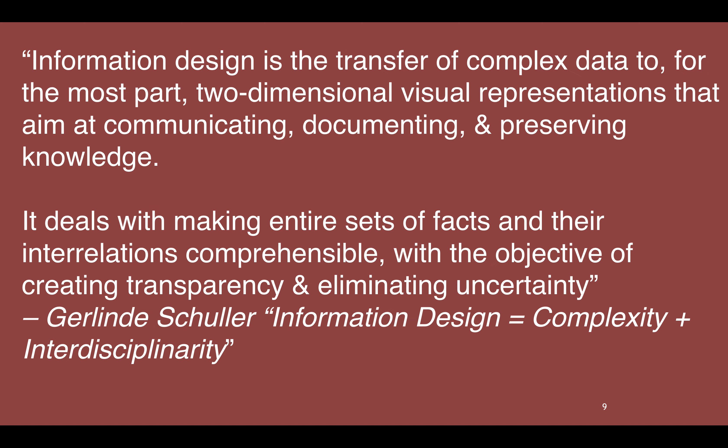A couple more definitions. This one: information design is the transfer of complex data into, for the most part, two-dimensional visual representations aimed at communicating, documenting, and preserving knowledge. It deals with making entire sets of facts and their iterations comprehensible, with the objective of creating transparency and eliminating uncertainty. This one highlights that data can be quite complex, that it's often presented in two dimensions, that you want to make clear the relationships within the data, and that you want to make the underlying phenomenon transparent and certain.